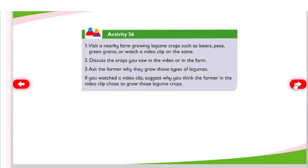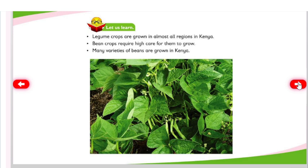Activity 56: Visit a nearby farm growing legume crops such as beans, peas, and green grams, or watch a video clip on the same. Discuss the crops you saw in the video or on the farm. Ask the farmer why they grow those types of legumes. Legume crops are grown in almost all regions in Kenya. Bean crops require high care for them to grow. Many varieties of beans are grown in Kenya.